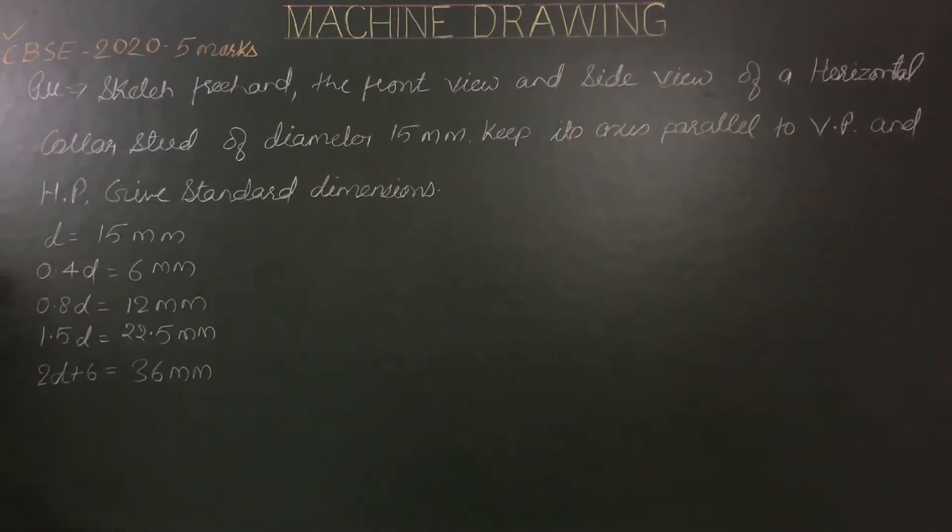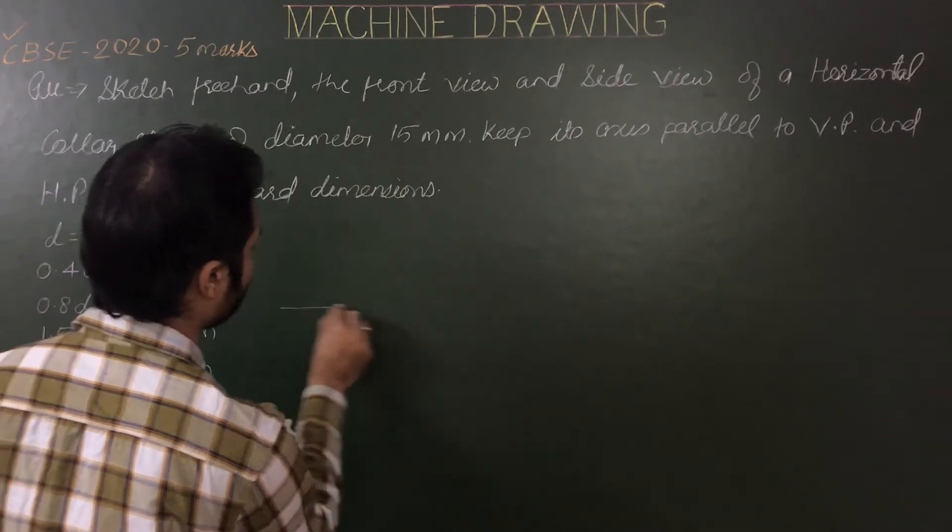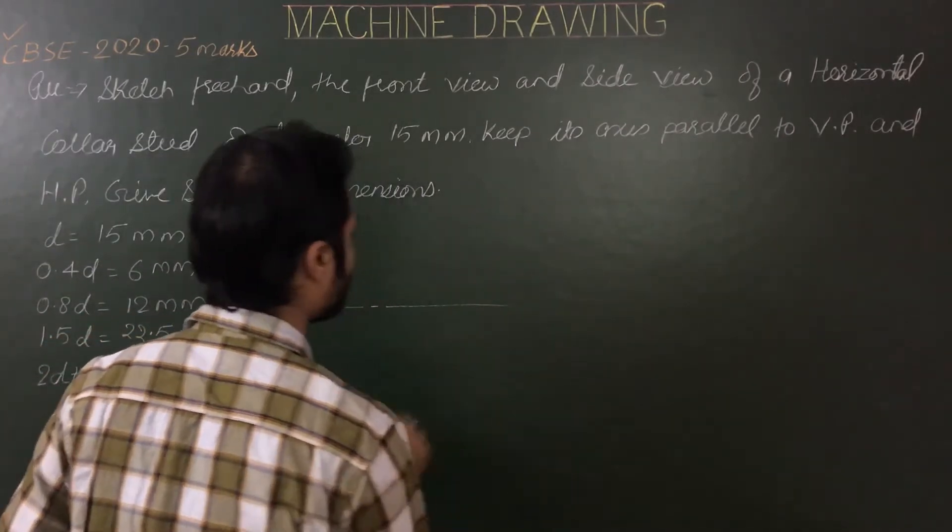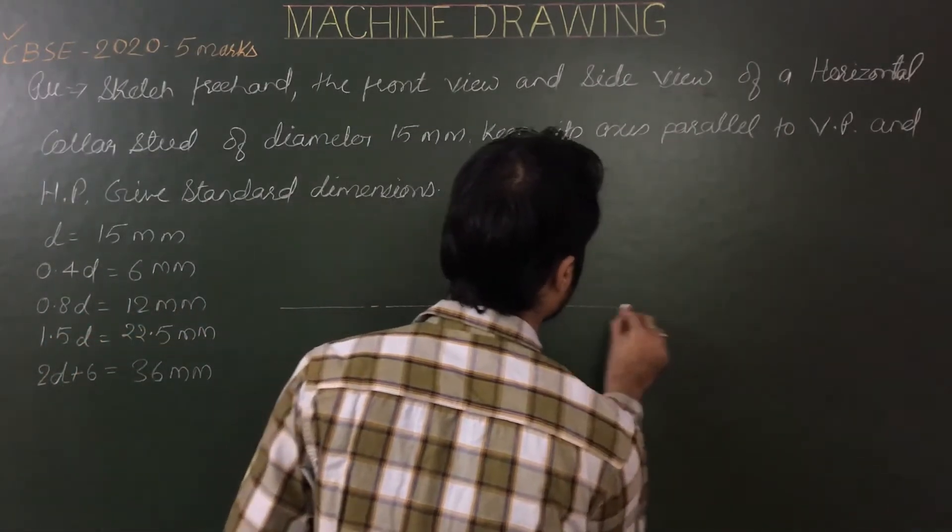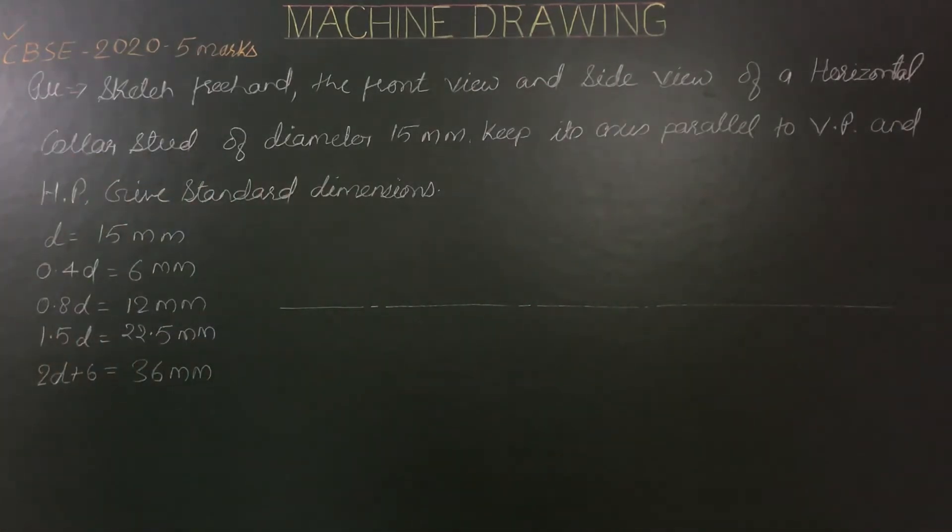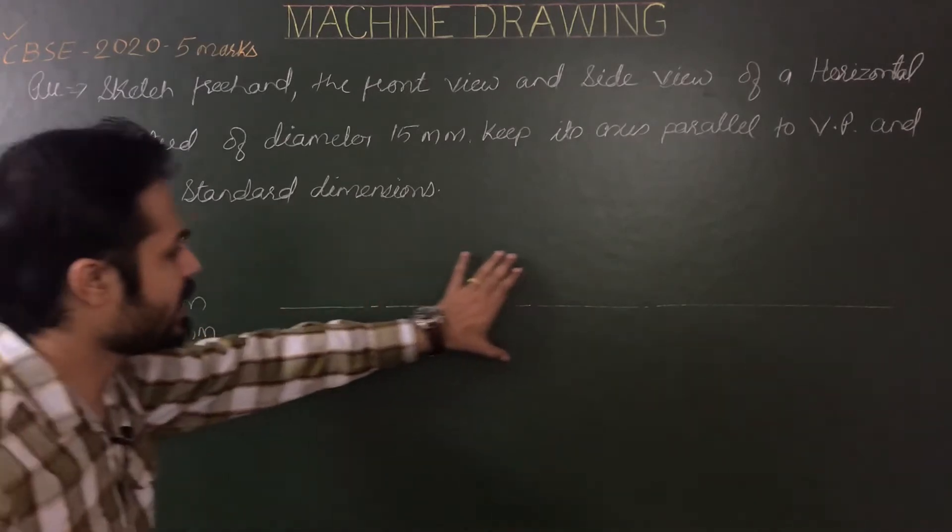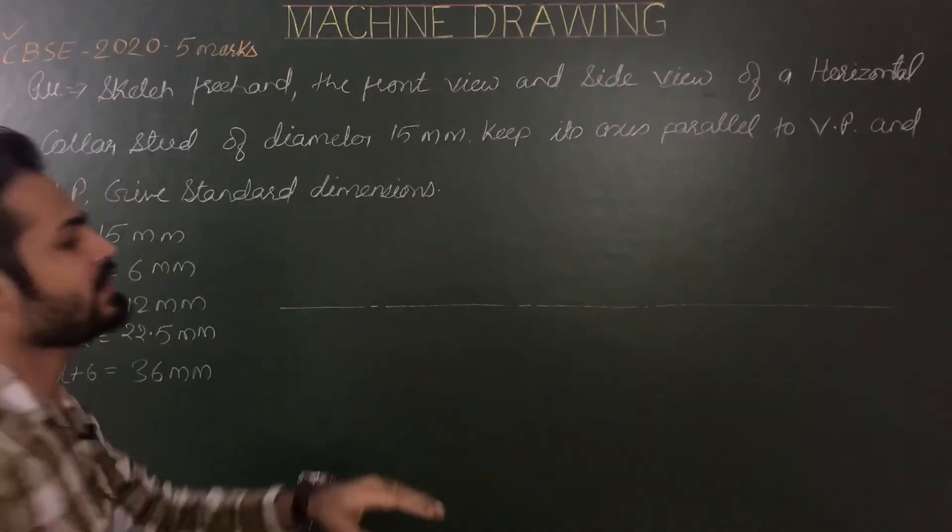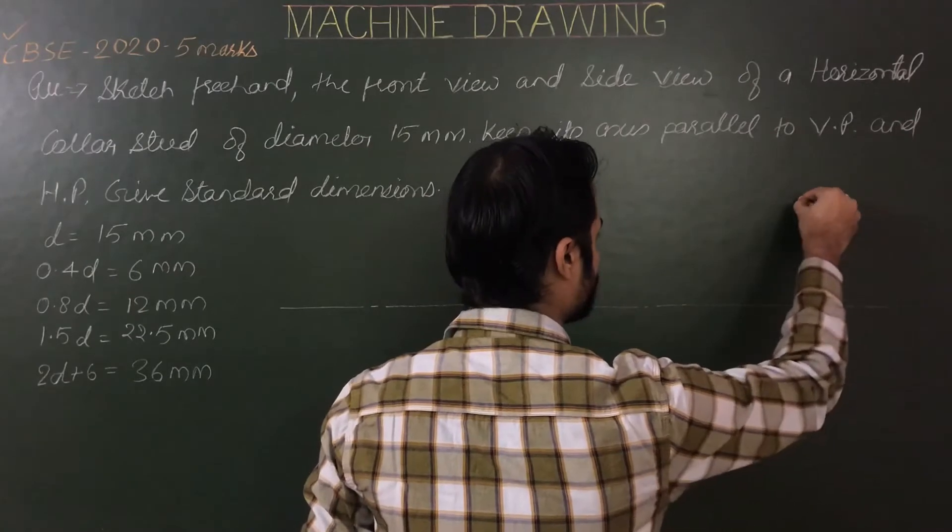Now for construction, from where to start? First of all we will draw its axis, solid axis of the stud like this. Then we have to decide from where to start, means where we are trying to project its front view and side view. So this area is for the front view and there we are going to project its side view.